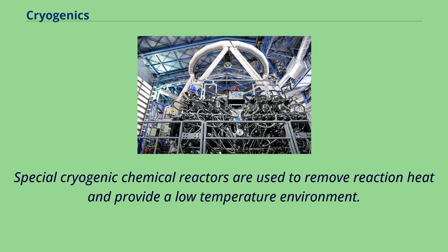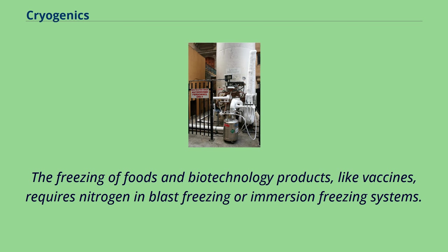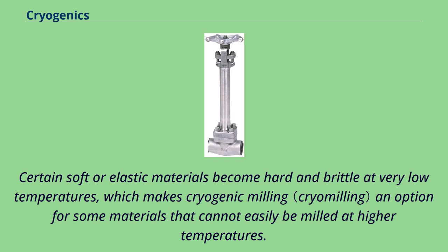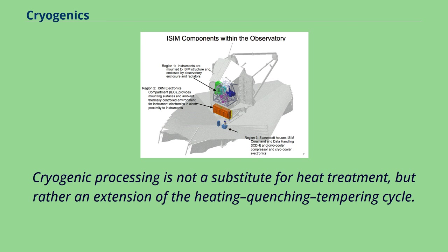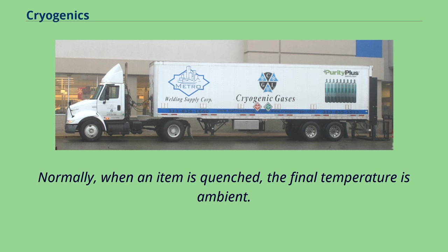Special cryogenic chemical reactors are used to remove reaction heat and provide a low temperature environment. The freezing of foods and biotechnology products like vaccines requires nitrogen in blast freezing or immersion freezing systems. Certain soft or elastic materials become hard and brittle at very low temperatures, which makes cryogenic milling an option for some materials that cannot easily be milled at higher temperatures.